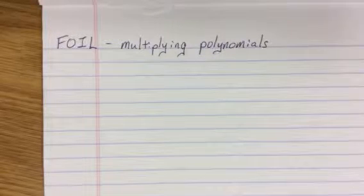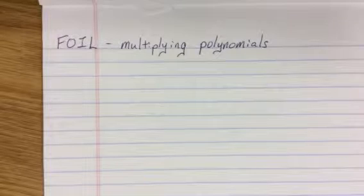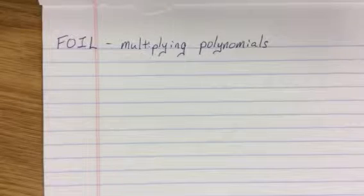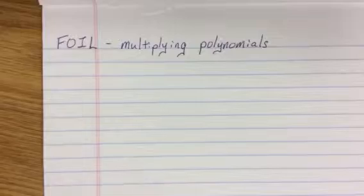This is Accuplacer prep on multiplying polynomials. Most of you guys know this by FOIL, but it doesn't just start and stop with FOIL.